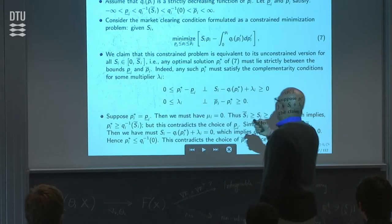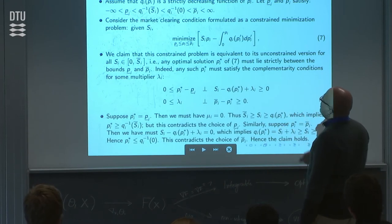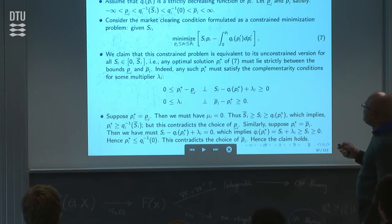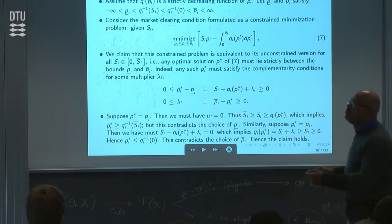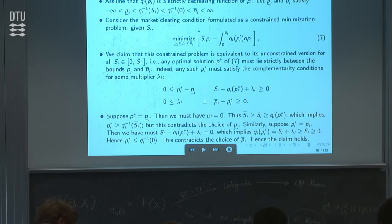So remember the market clearing condition. I'm going to impose this price bound. In reality, this bound doesn't exist—but once I make an assumption that the price function satisfies this, when I impose this bound, I have to prove that this is still the solution of the unconstrained problem. Any optimal solution must lie strictly in the interior; the bounds are never active.